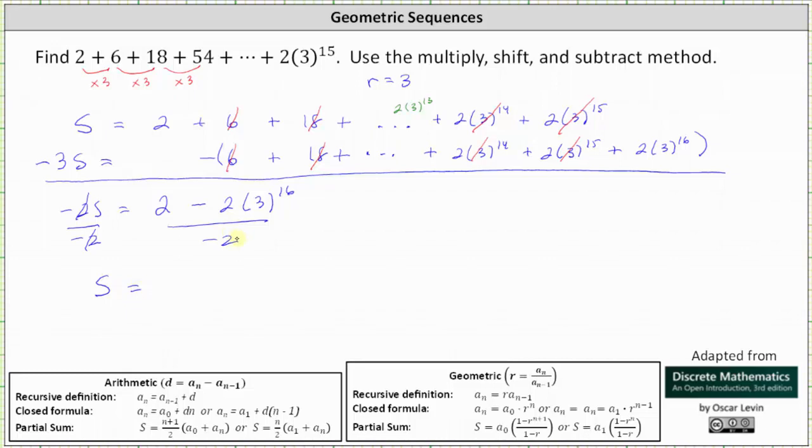We need to be careful simplifying here on the right. Let's write the right side as 2 divided by negative 2 minus 2 times 3 to the 16th divided by negative 2. Simplifying, we have s equals 2 divided by negative 2 is negative 1. Here we're subtracting a negative which becomes plus 2 divided by 2 simplifies to 1, leaving us with just 3 to the power of 16. So the given sum is exactly negative 1 plus 3 to the power of 16.